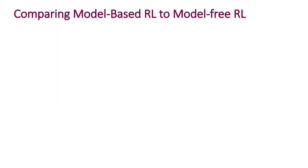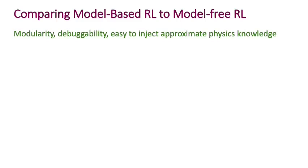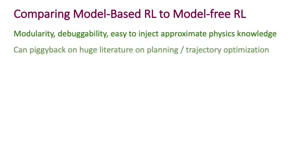To wrap up, let's compare model-based reinforcement learning to model-free reinforcement learning along a few axes. Model-based RL tends to be modular because you learn a model separately and then apply dynamic programming or other approaches. That lends itself to easy debuggability — you can independently test the two phases. It's also easy to inject approximate physics knowledge, such as knowing that a system follows Newton's laws, which allows more efficient learning through domain knowledge.